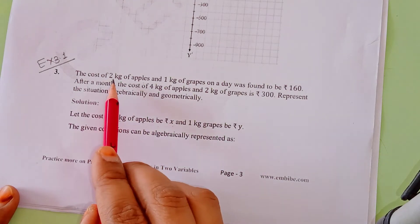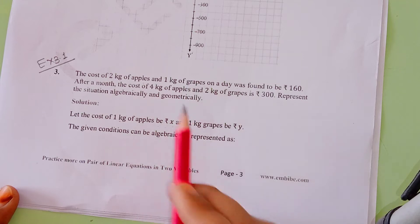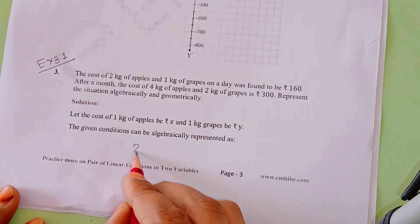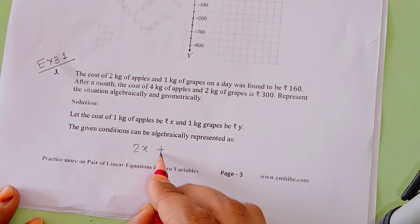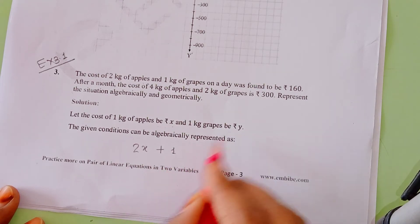Question says 2 kg of apples and 1 kg of grapes. 2 kg of apples means 2x, and 1 kg of grapes means 1y, which equals the total cost of 160. So 2x + y = 160. This is our equation number one.